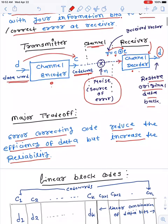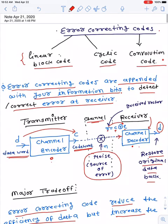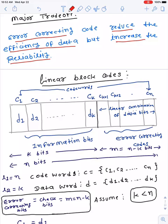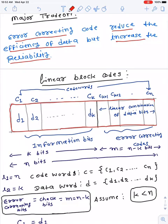We are going to start with the linear block code. In today's lecture we will address only the encoding process, and in the next lecture the decoding of linear block code. In a linear block code, this whole block is known as a code word, consisting of two parts: the first k bits are known as information bits, and the extra bits appended at the end are known as check bits or error correcting bits.